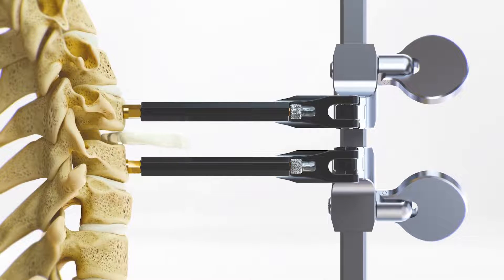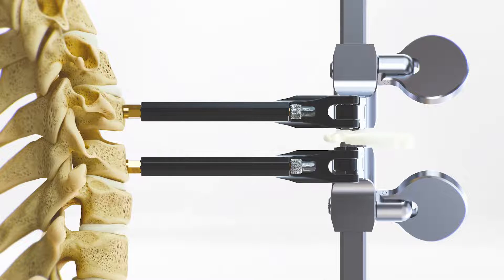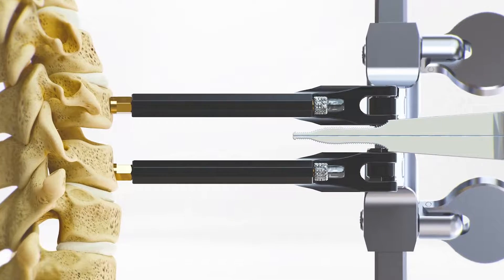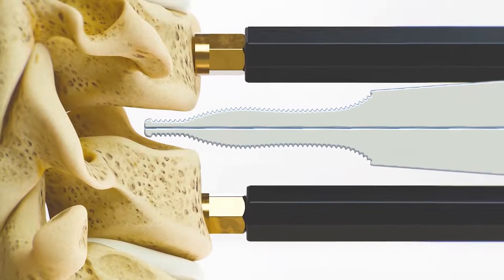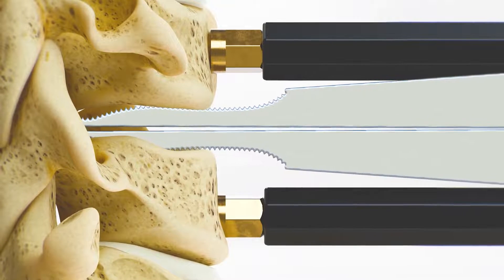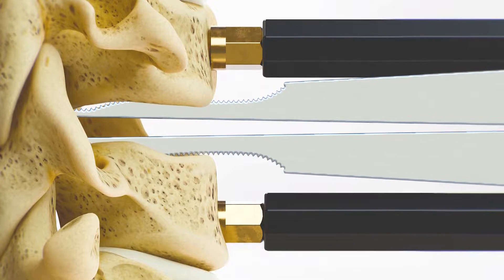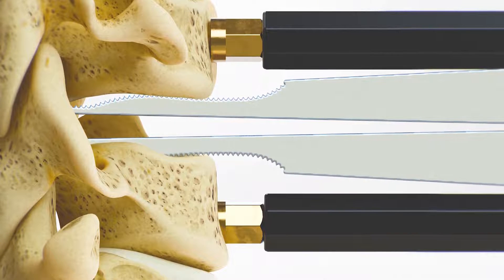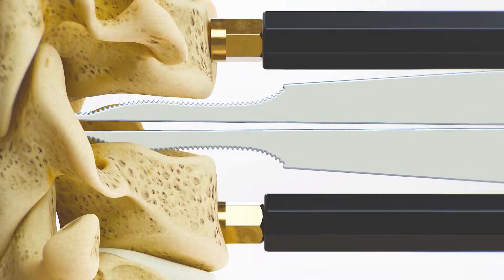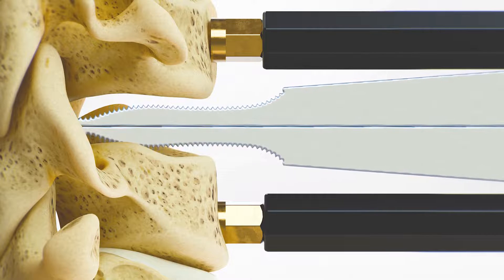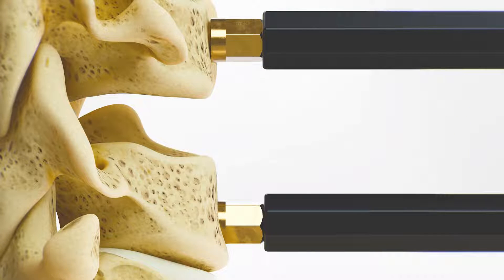Remove as much of the disc material as possible, allowing the tip of the ProDisc intervertebral spreader to be placed posteriorly in the disc space. Mild distraction may be applied with the ProDisc retainer to assist the discectomy. Distract the intervertebral space with the ProDisc intervertebral spreader and adjust the ProDisc retainer as needed to maintain distraction.